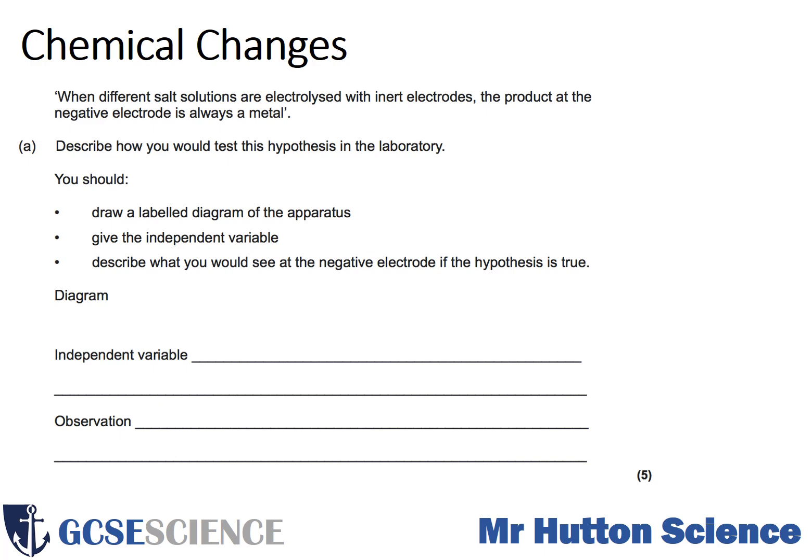The mark scheme is there to help you mark your work. The next question starts with a statement: when different salt solutions are electrolyzed with inert electrodes, the product at the negative electrode is always a metal. Describe how you would test this hypothesis in the laboratory. You should draw a labelled diagram of the apparatus, give the independent variable, and describe what you would see at the negative electrode if the hypothesis is true.